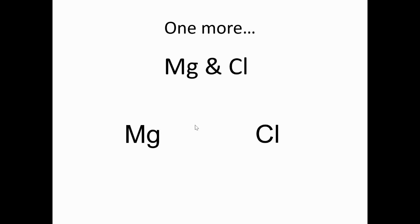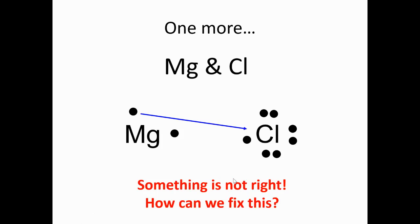Okay, magnesium and chlorine. All right, magnesium has two valence electrons. Chlorine has seven. Okay, something is wrong here. How can we fix this? What do we need to add to make this an ionic bond?